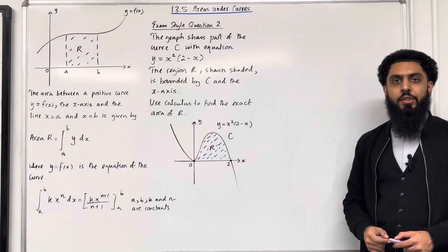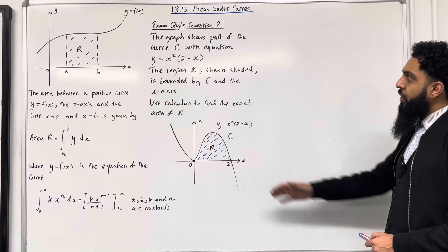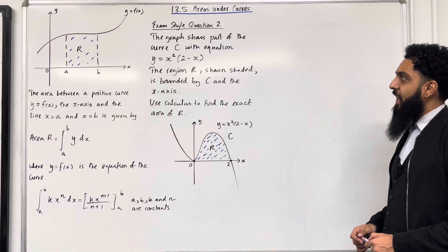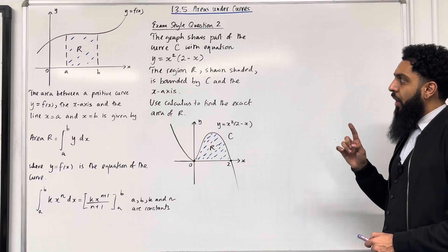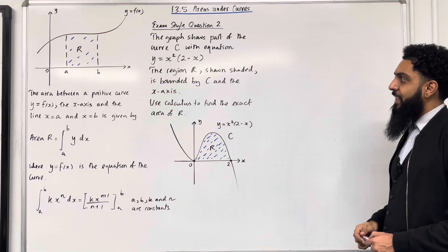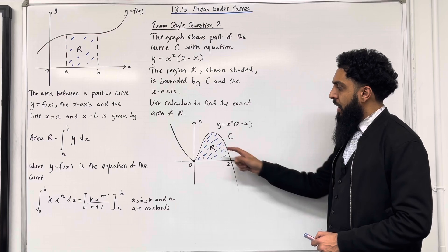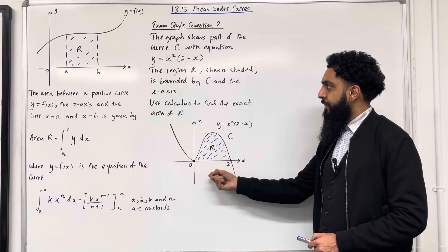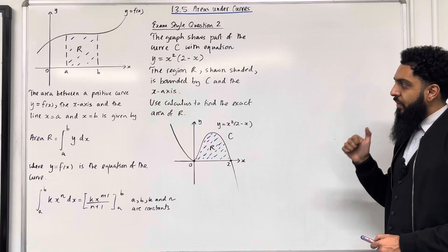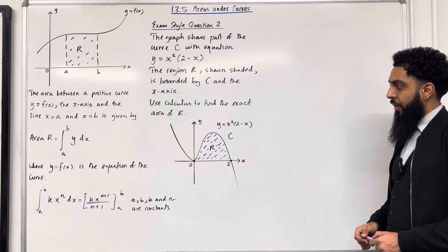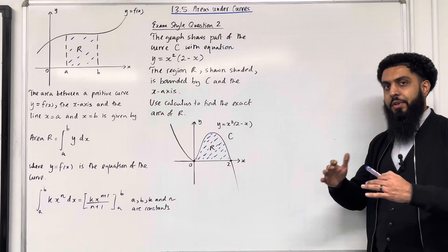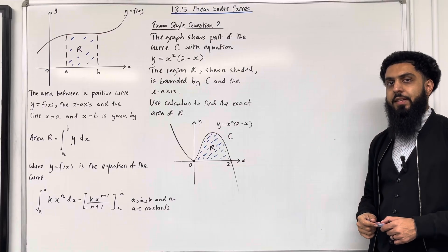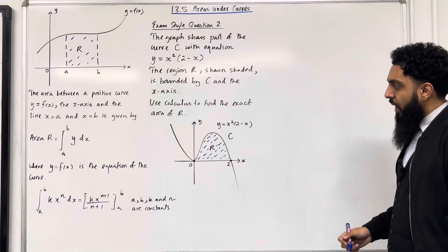Moving on to exam-style question 2. The graph shows part of the curve C with equation y = x²(2 - x). The region R, shown shaded, is bounded by C and the x-axis. Use calculus to find the exact area of R. Because we're looking at an area under a curve, the specific technique of calculus that we're going to use is integration.